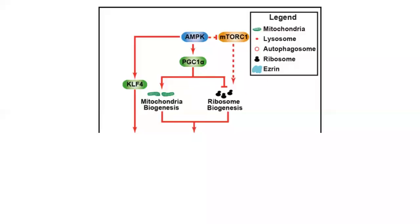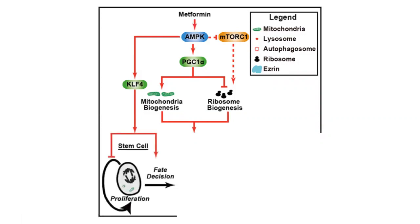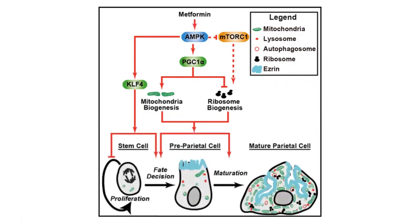Only recently has the notion reemerged that cellular metabolism can regulate stem cell behavior. Our study investigates the role of AMP kinase as a metformin-responsive metabolic pathway in guiding fate specification and maturation of the acid-secreting gastric parietal cells, thus implicating AMPK in the differentiation of gastric epithelial progenitors.